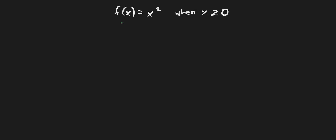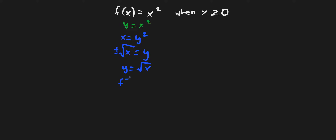Let's do this intuitively first — find the inverse and then look at its derivative. Starting with y equals x squared, I swap the x and y values to get x equals y squared. Taking the square root of both sides, and since x is greater than or equal to zero we take the positive root, we get y equals root x. This is the inverse.